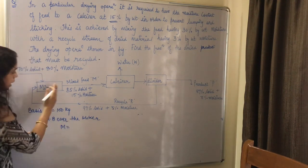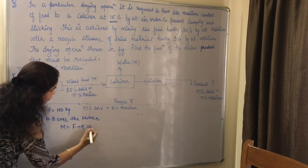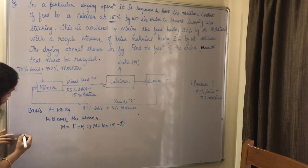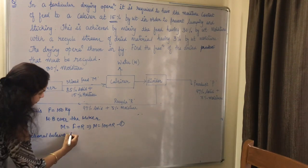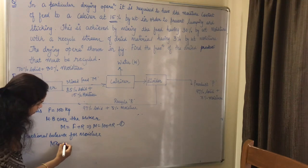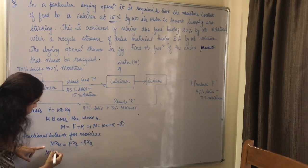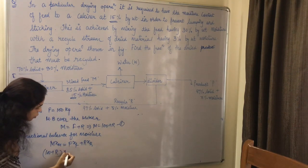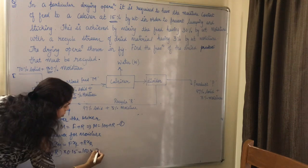The total mass entering the mixer: M = F + R, so M = 100 + R — this is equation number 1. Next, we do the fractional balance for moisture: M·x_M = F·x_F + R·x_R, which gives (100 + R)·0.15 = 100·0.30 + R·0.03. Here, x_M = 0.15, x_F = 0.30, and x_R = 0.03.